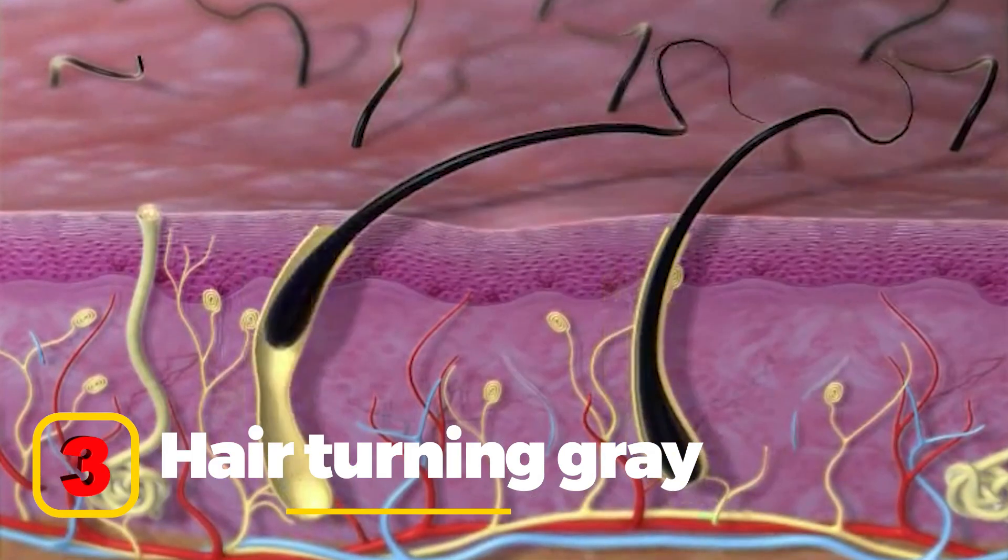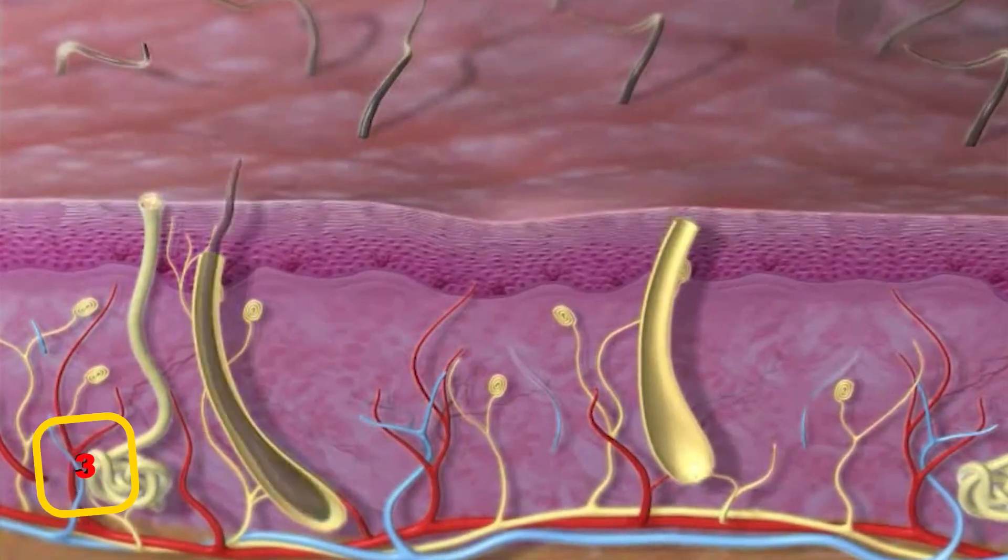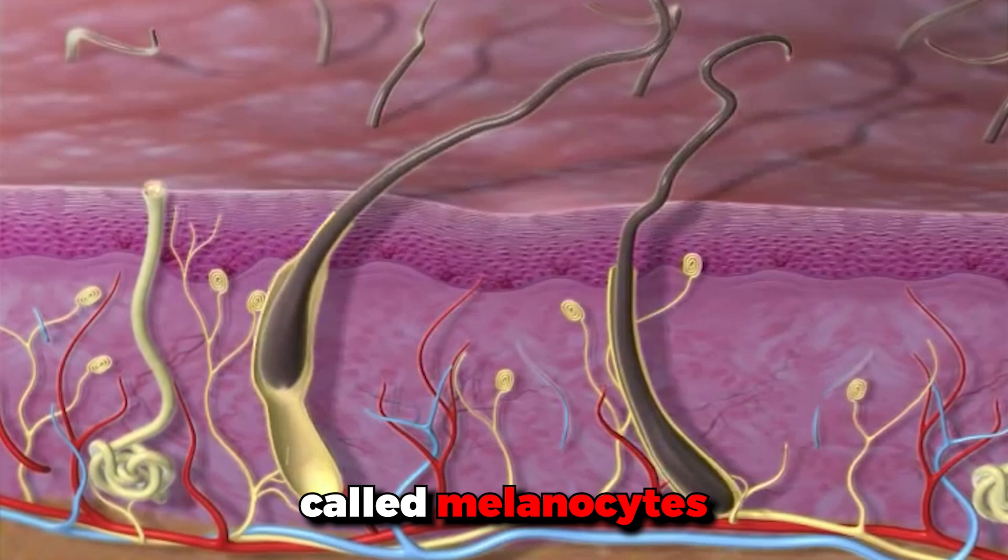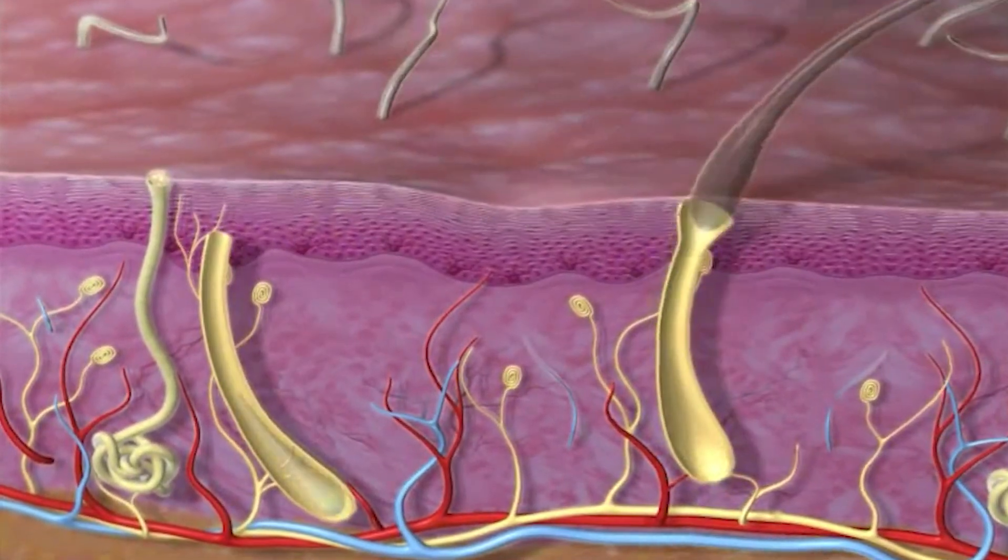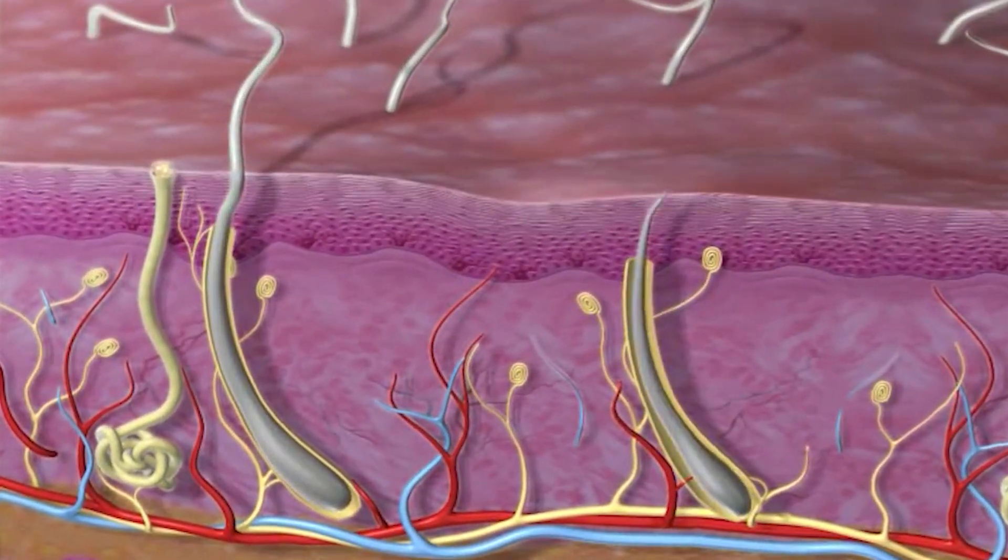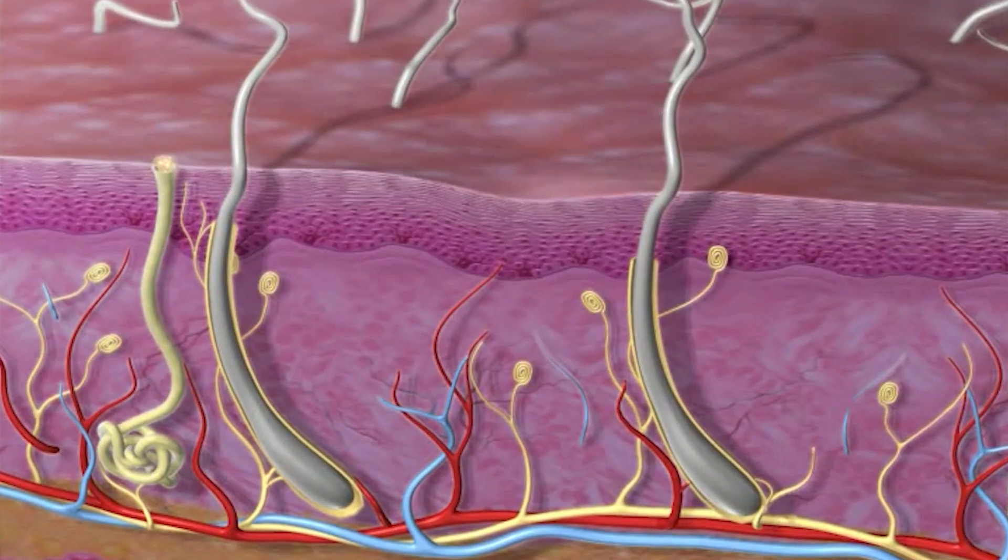Number 3: Hair turning gray. Scientists have shown that when pigment producing cells, called melanocytes, get stuck in an immature state, they fail to develop their blonde, brown, red, or black hair color. This arrested state leads to graying hairs.